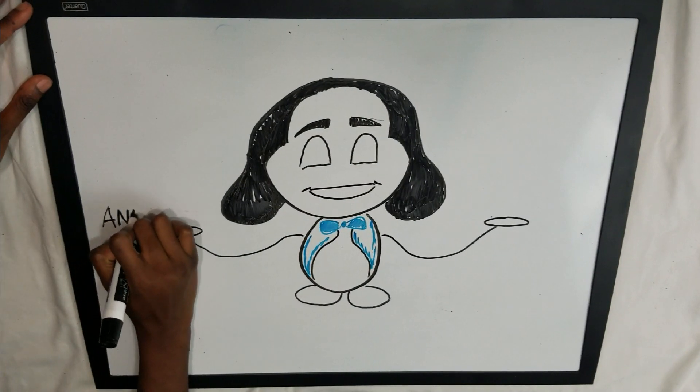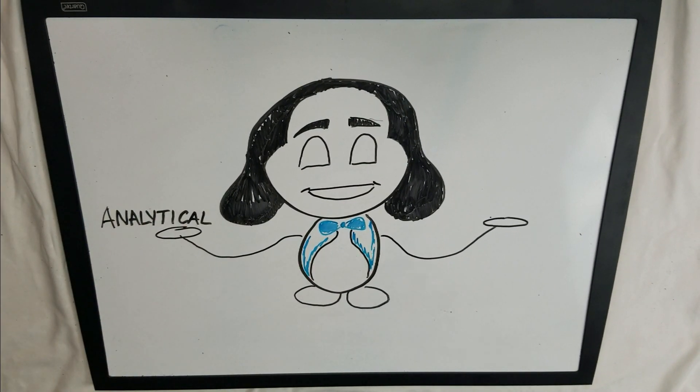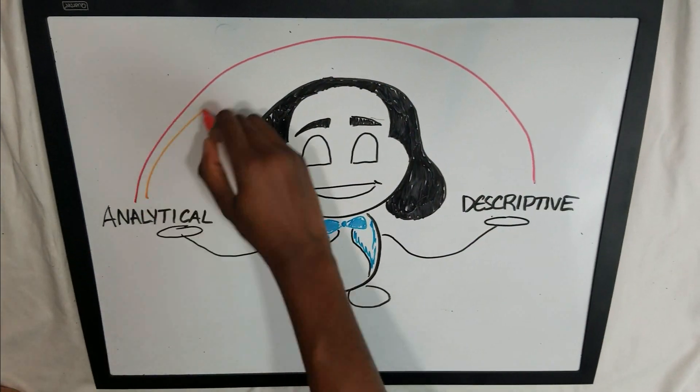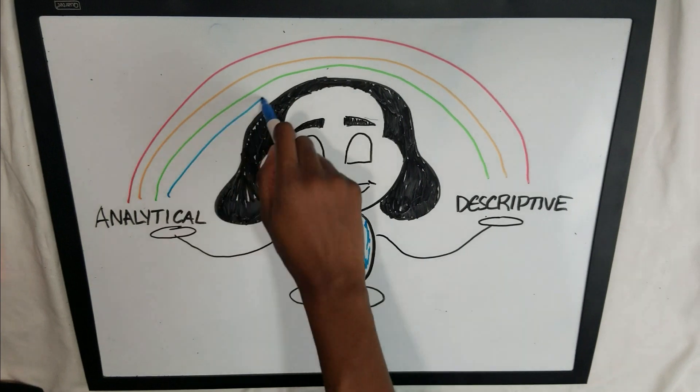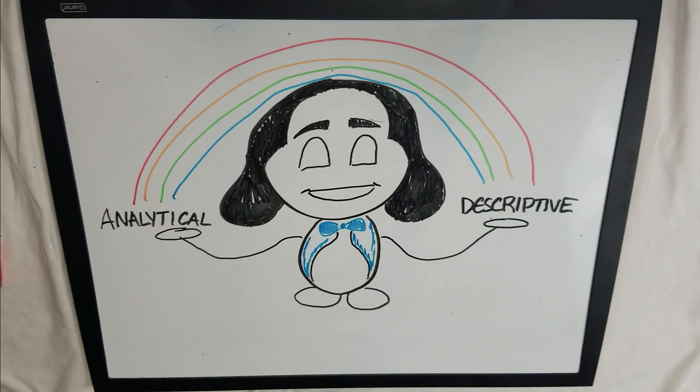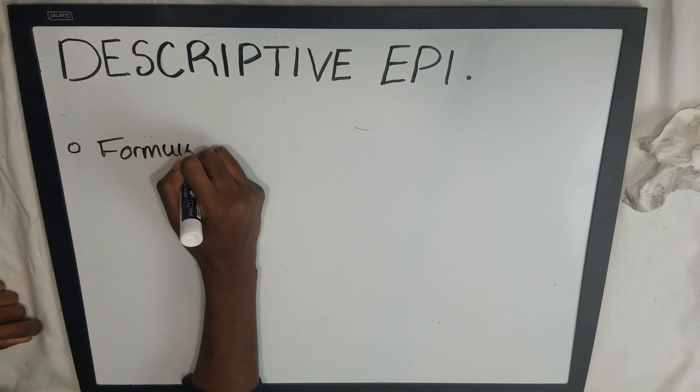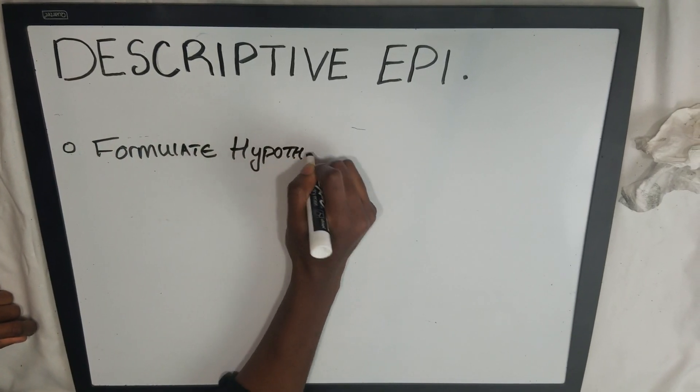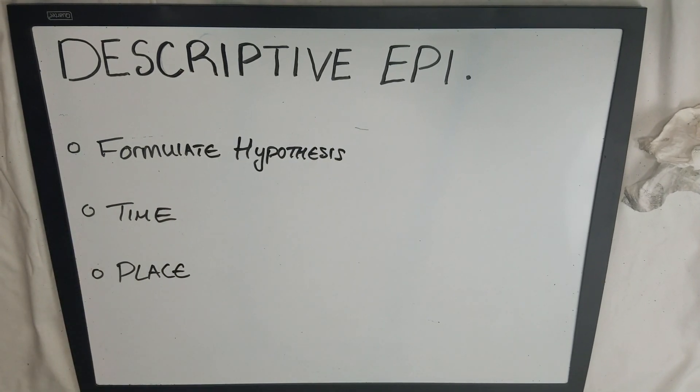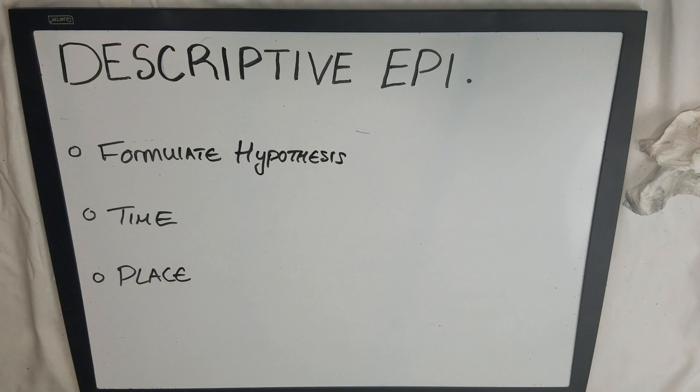The fascinating thing about John Snow's work was his use of conventional and unconventional applications of epidemiology. Snow used two approaches in his investigations which are known today as descriptive and analytical epidemiology. The first approach, descriptive epidemiology, is used to formulate hypotheses and is concerned with the characteristics of the people affected and looks at time and place of occurrence.